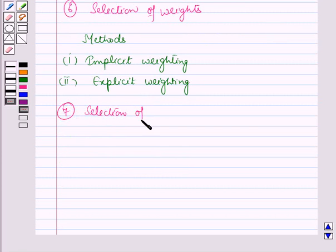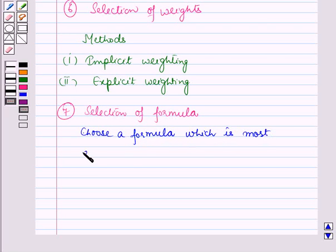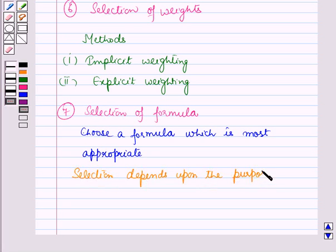Next is the selection of an appropriate formula. Different formulas can be used in the construction of index numbers, but the statistician has to choose a formula which is most appropriate. The selection depends upon the purpose of the index number and data availability.